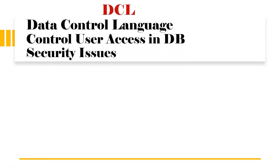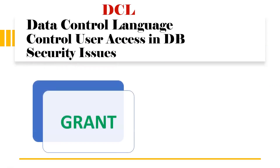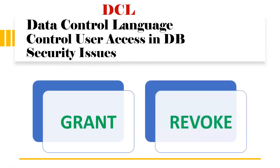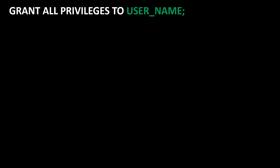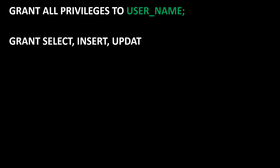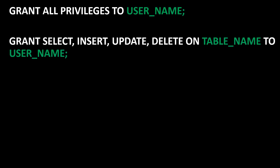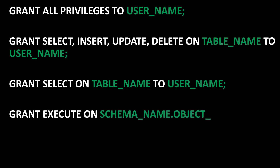Now we'll see each command in detail. First is DCL, data control language, which is used to control user access in the database — mainly for security purposes. The first DCL command is grant. The grant command is used to provide privileges to a particular user. The syntax is: grant all privileges to a particular user. We can also grant privileges on a particular table to a particular user. For package compilation, we use the execute privilege.